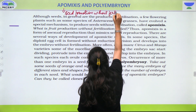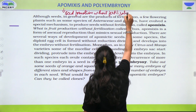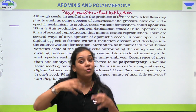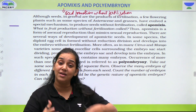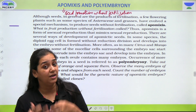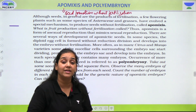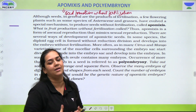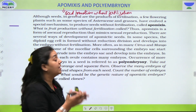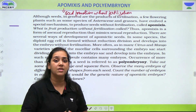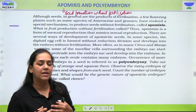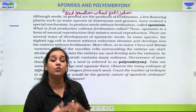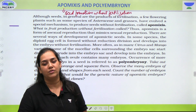Ab aapko yeh yaad rakhna hai ki seed kahan form ho raha hai? The ovule is transforming into a seed. Toh the seed is forming inside the ovary. Jab seed formation ho raha hai inside the ovary, so there is also a high chance ke ovary fruit formation dikhae ga. But hum yahan peh fruit formation peh concentrate nahi kar rahe, hum baat kar rahe hai seed formation ki. Apomixis is an ability of the plant to produce seed without fertilization.